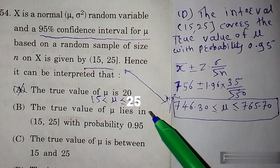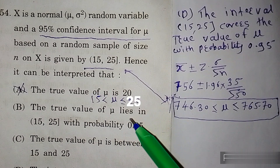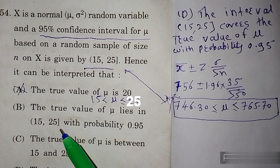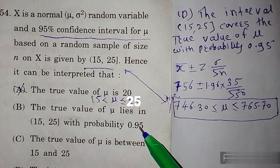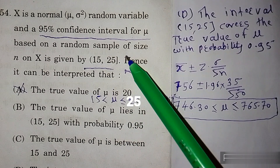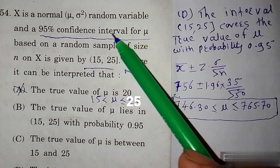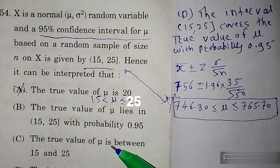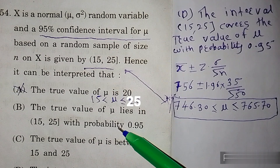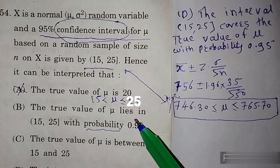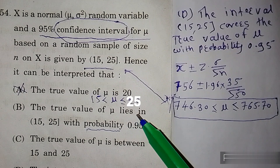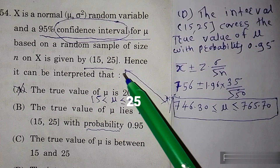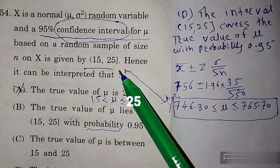Option B है: the true value of mu lies in 15 to 25 with probability 0.95. लेकिन हमें पूछा क्या है — confidence interval का question — और यहाँ पे probability है। Option B के लिए सबसे आसान तरीका देखें तो यह interval है।